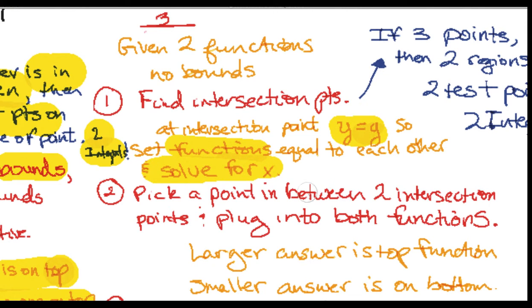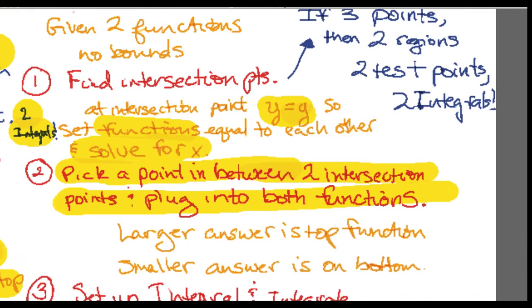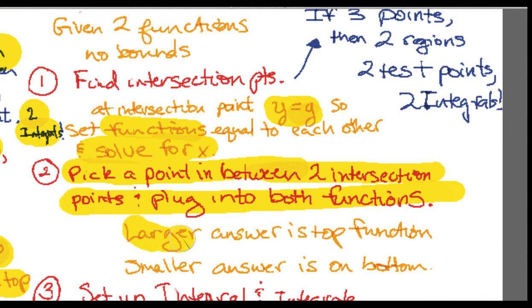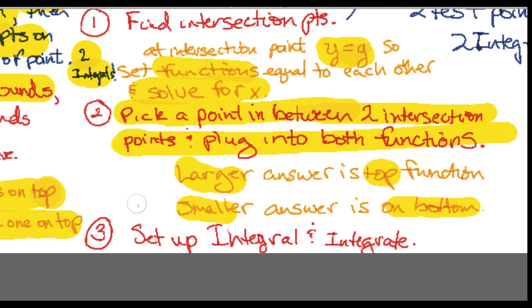After you solve for x, then you're going to pick a point in between the two intersection points, your test point, and plug it into both functions. If your answer is the larger answer, then that's the function on top and comes first in your integral, and then the smaller answer to that same test point would be on bottom. Now once you know which one's on top, which one's on bottom, you got the intersection points, you set up the integral and you integrate.